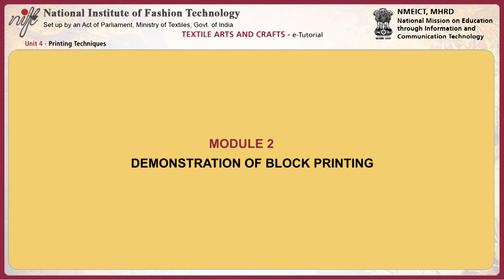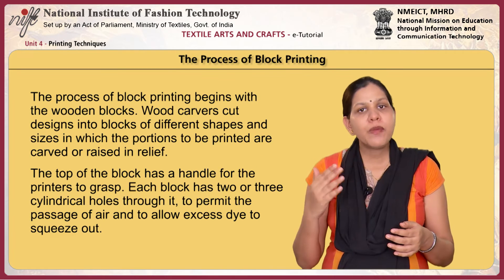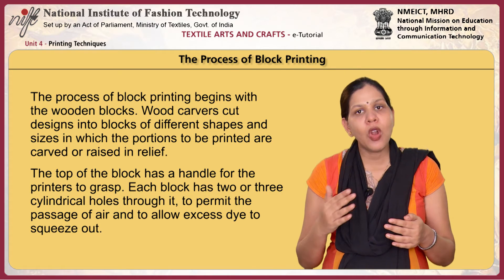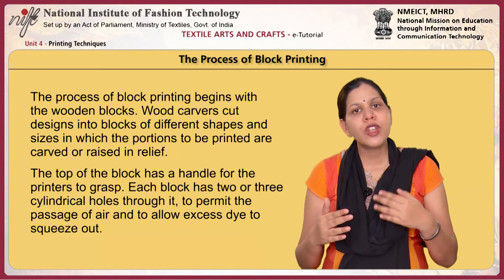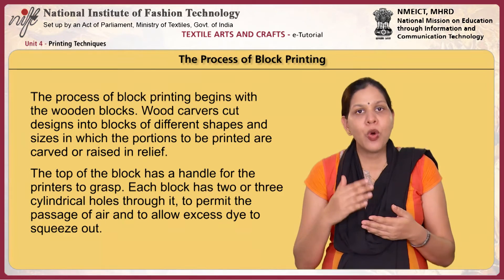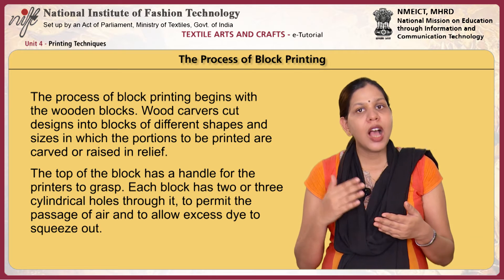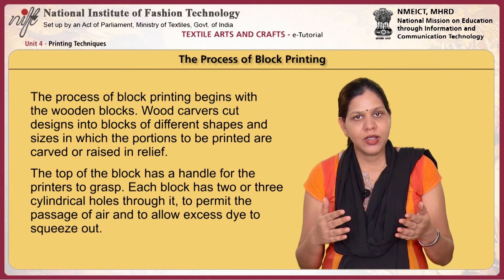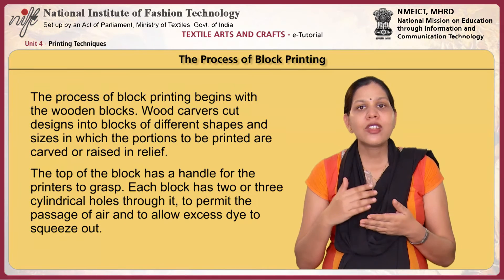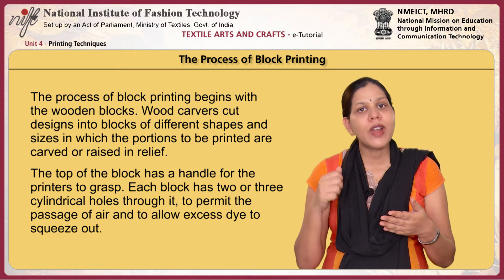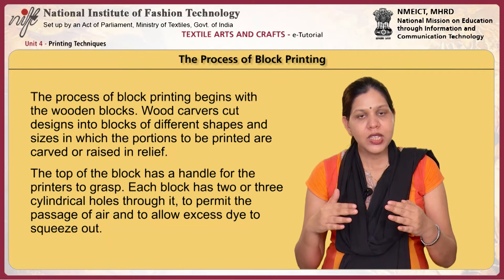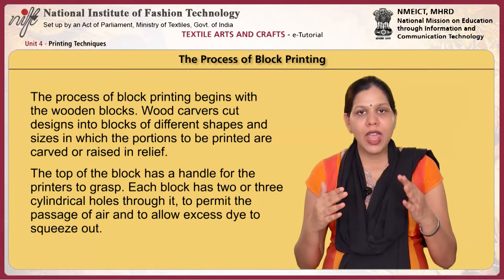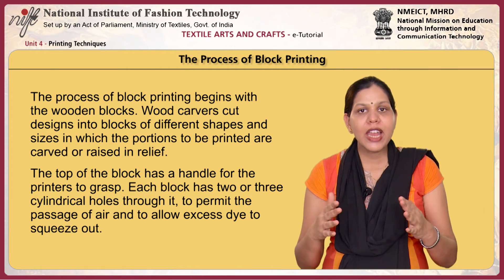This module gives an overview of the block printing technique. The process of block printing begins with the wooden blocks. Wood carvers cut designs into blocks of different shapes and sizes in which the portions to be printed are carved or raised in relief. The top of the block has a handle for the printers to grasp. Each block has two or three cylindrical holes through it to permit the passage of air and to allow excess dye to squeeze out.